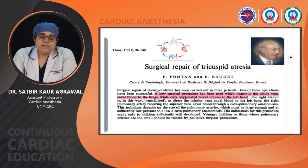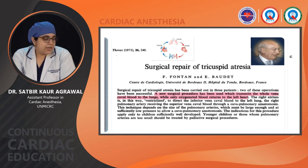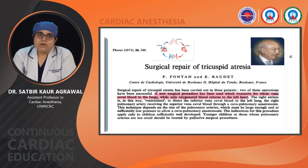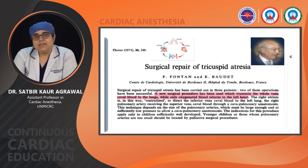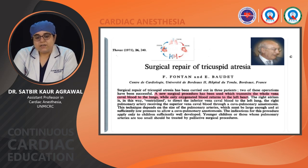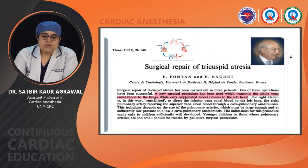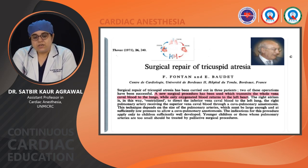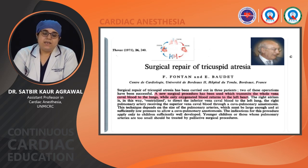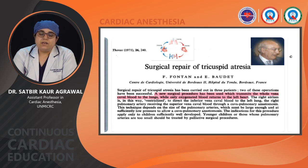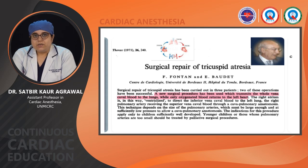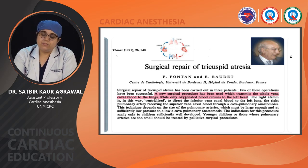Looking at the first published case series by Dr. Francis Fontan and E. Baudet back in 1971, they did 3 cases of tricuspid atresia. Their concept was that there should be a new surgical procedure in which all vena cava blood is transmitted into the lungs while only oxygenated blood returns to the left heart. They thought about ventriculizing the RA — taking it as a volume chamber and connecting both caval veins to the pulmonary arteries.